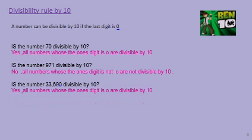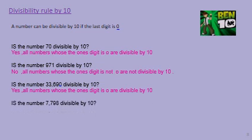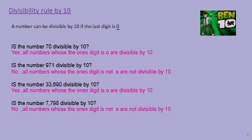So all numbers that have 0 in the ones digit are divisible by 10. What about 7,798 — is it divisible by 10? Does it have a 0 at the end? No. So this number is not divisible by 10.